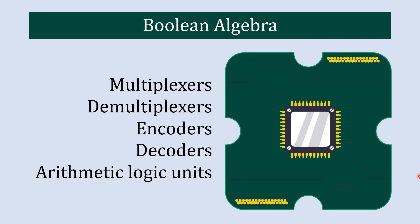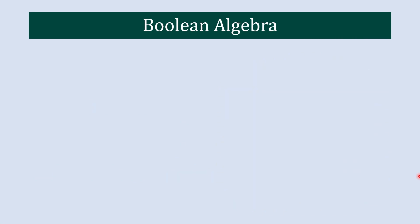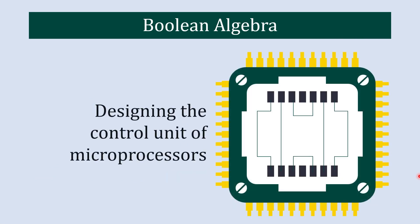These circuits perform various logical and arithmetic operations that are fundamental to computer processing. Boolean equations also help in designing the control unit of a microprocessor. They are used to determine the sequence of operations in response to machine language instructions.